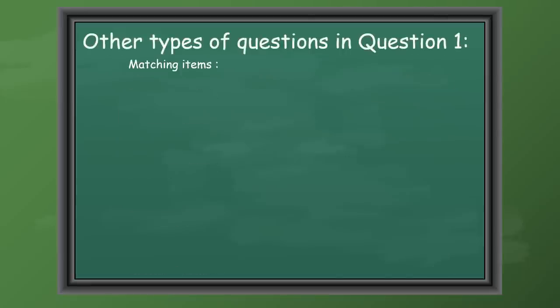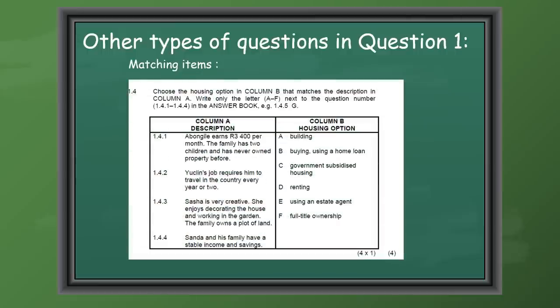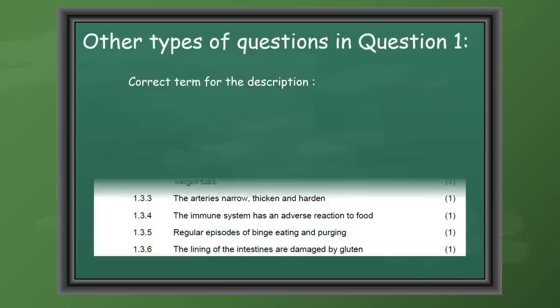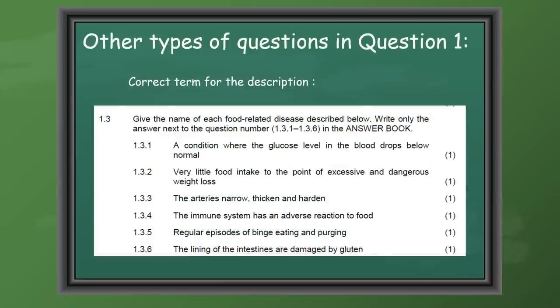Another type of question that you can expect in Question 1 will be to match Column A with Column B or C, and you only write it as 1.4.1 C. Do not write out the whole terminology or the whole sentence. Only write the symbol next to your question number. Another one that can be expected is to write the correct term for the description. It's very important that you know your definitions in order to answer this question.